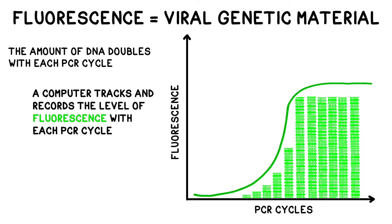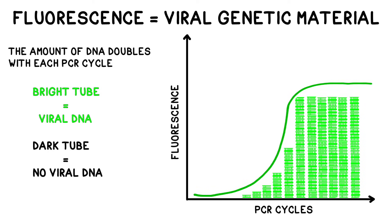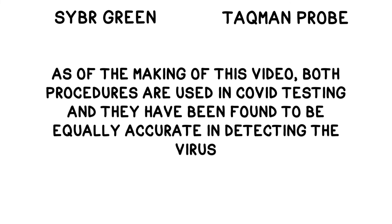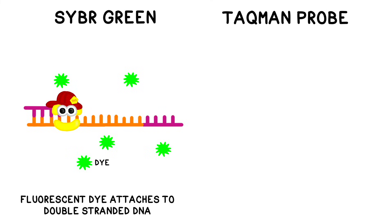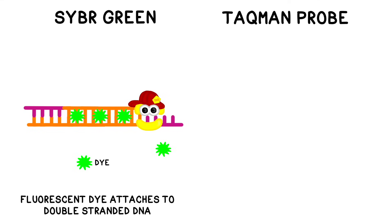The amount of material doubles with each cycle. If the patient's sample contained viral RNA, the tube will grow brighter and brighter as the process continues. If the sample contained no viral RNA, the tube will remain dark. There are two sets of fluorescent reagents that are commonly used: SYBR Green and TaqMan probes. Both reagents have been shown to be equally accurate in detecting the presence of SARS-CoV-2. SYBR Green is a dye that attaches to double-stranded DNA but will not attach to single-stranded DNA. As the amount of DNA doubles, the amount of fluorescence will increase as well.